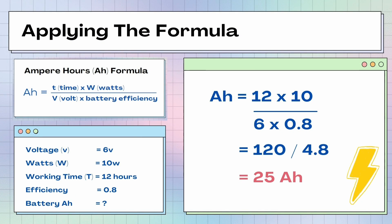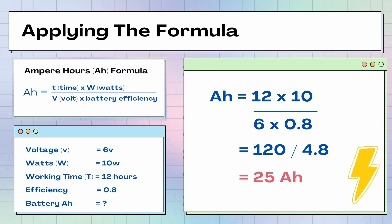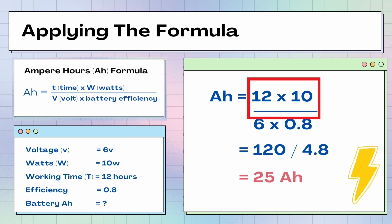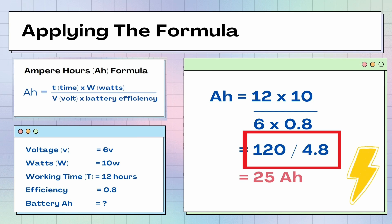Now we have our example calculation here. We have determined our variables: for the voltage we have 6 volts, our wattage is 10 watts, and our working time is 12 hours. Then you see a battery efficiency here, which is 0.8. We then apply the variables to our formula. The upper side has 12 multiplied by 10 — where 12 is our working time and 10 is our wattage. In the lower side you could see 6 multiplied by 0.8, where 6 is our voltage and 0.8 is our battery efficiency. We then simplify this calculation to 120 divided by 4.8.